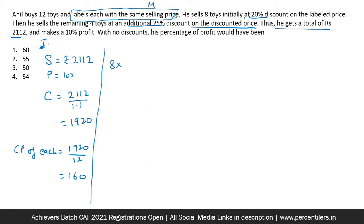Eight toys were sold at 20% discount. That is 0.8M, 80% of M after 20% discount, it remains 80% of M and four toys at 40% discount. Why 40%? Because already 20% discount was there. So from 100, it became 80 and a further 25% on this. Now 25% is applicable on 80 and it leaves to 60. So 100 to 60, there is a 40% discount.